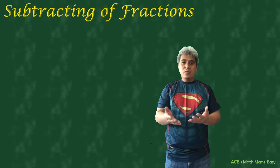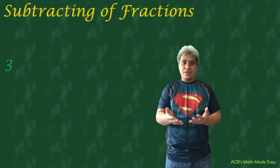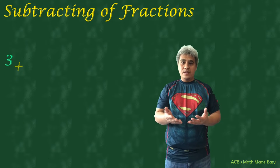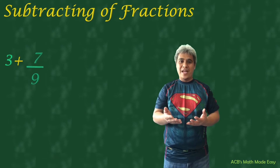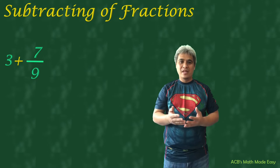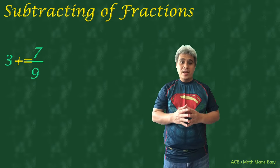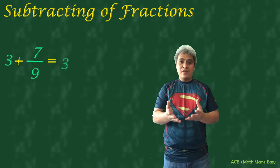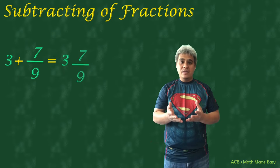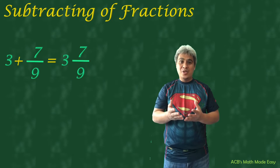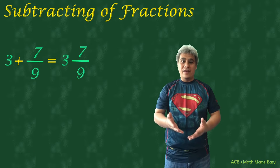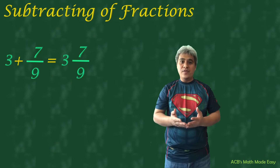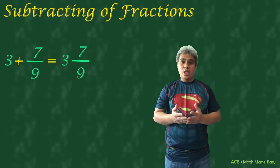Adding a whole number to a fraction is just combining them. For example, 3 plus 7 over 9 is just 3 and 7 over 9. Or we can use the formula and we will get the same answer.